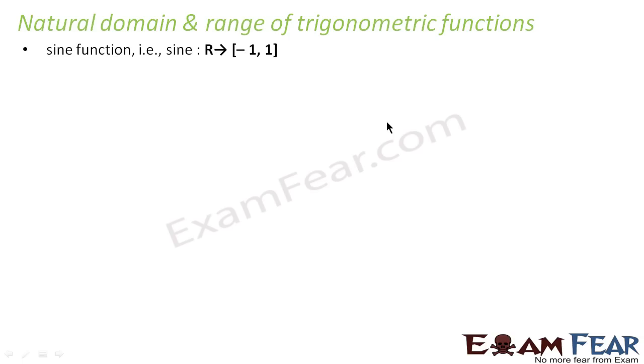Let's try to find the natural domain and range for trigonometric functions. For sine, the domain is R, you can take any value. For example, if you say sin x equals y, x can be any real number and y will always be between minus 1 to 1.